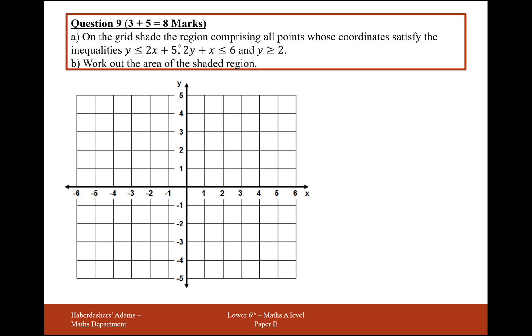On the grid, shade the region comprising all of the coordinates whose satisfy the inequalities: y is less than 2x plus 5, 2y plus x is less than 6, and y is greater than or equal to 2. So let's do the last one here, that's probably the easiest one.